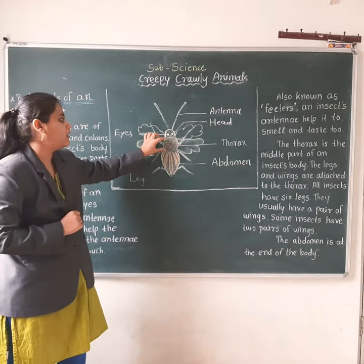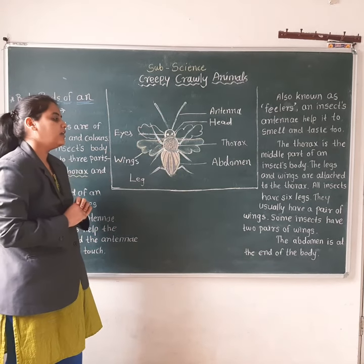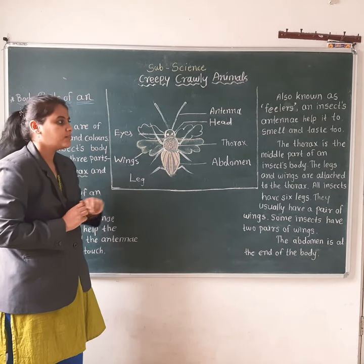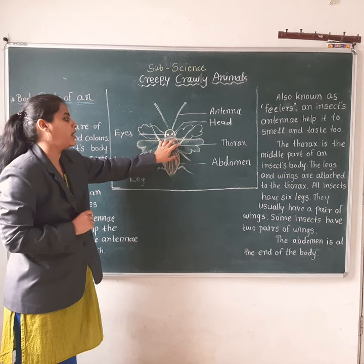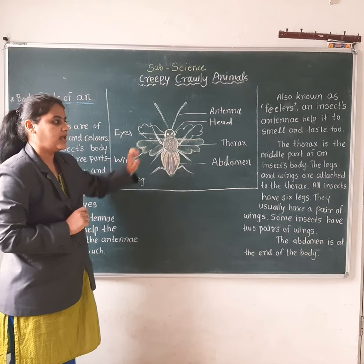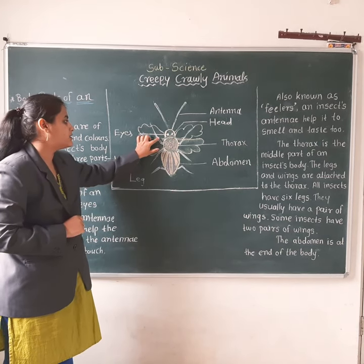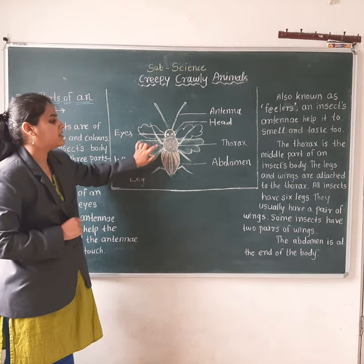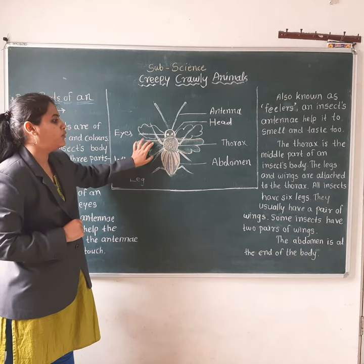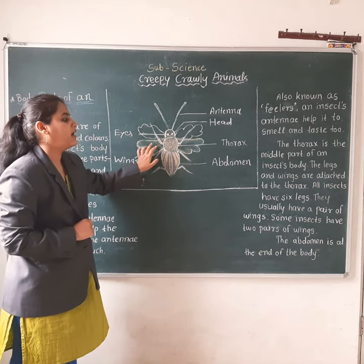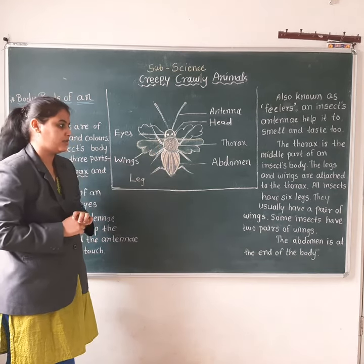The next part is the middle part of the insect's body — that is the thorax. The thorax is the middle part of an insect's body. The legs and the wings are attached to the thorax.